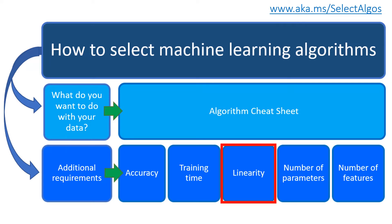Then we have linearity. Linearity in statistics and machine learning means that there is a linear relationship between a variable and a constant in your data set. For example, linear classification algorithms assume that classes can be separated by a straight line. Lots of machine learning algorithms may make use of linearity.